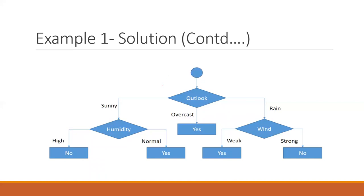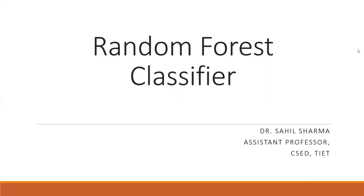That covers the CART model. We have now completed all three types of decision trees: ID3, C4.5, and CART. The next classifier is random forest, which has some similarity to decision trees and is actually built from decision trees, but it is different from a basic decision tree model.